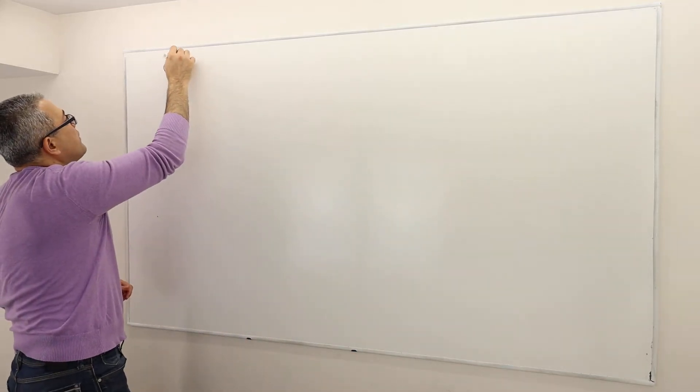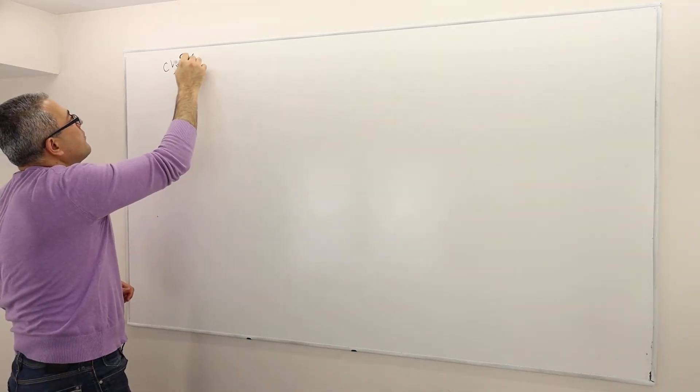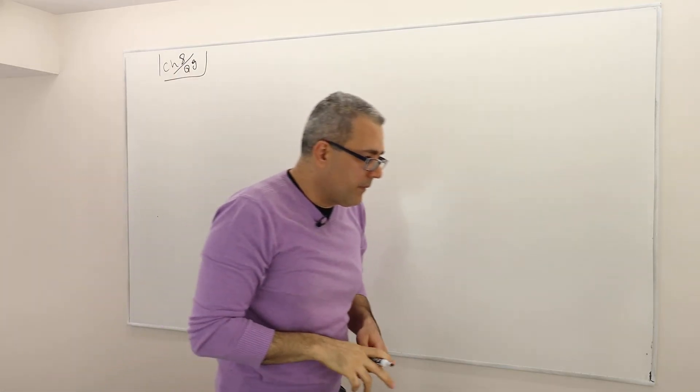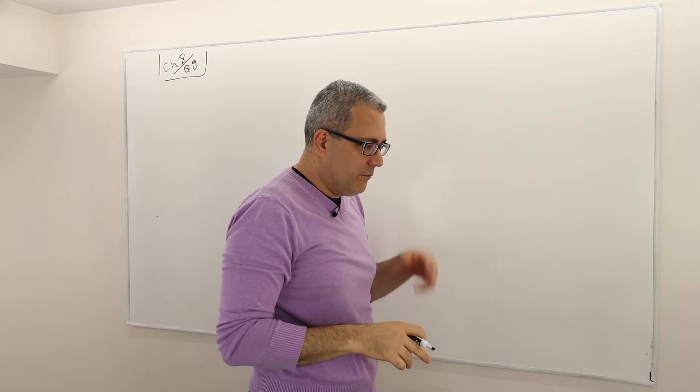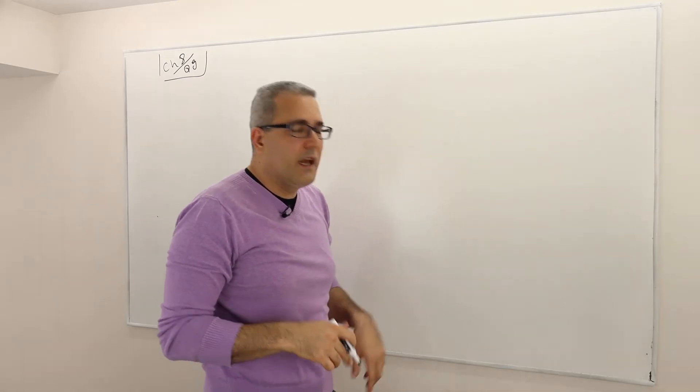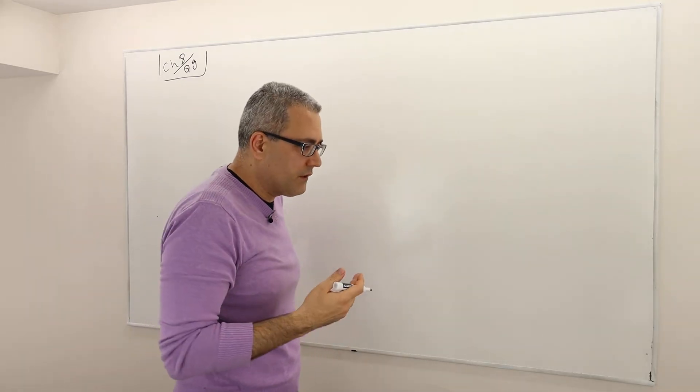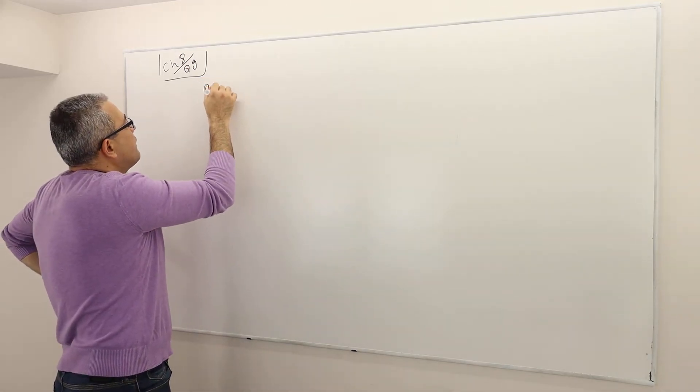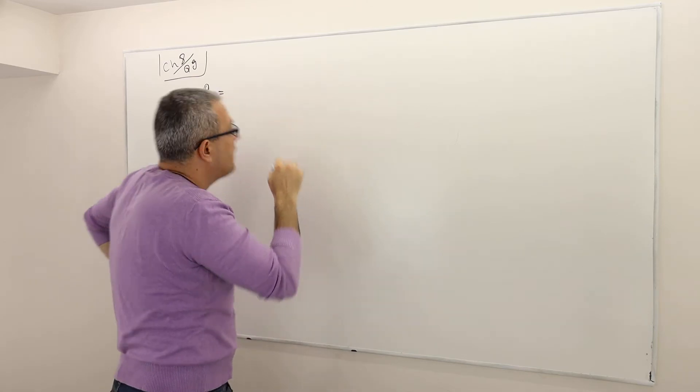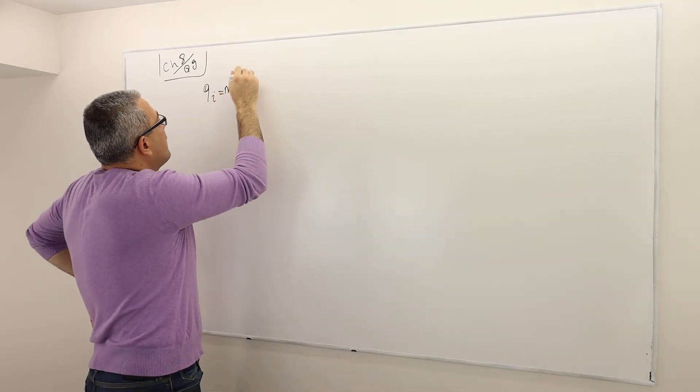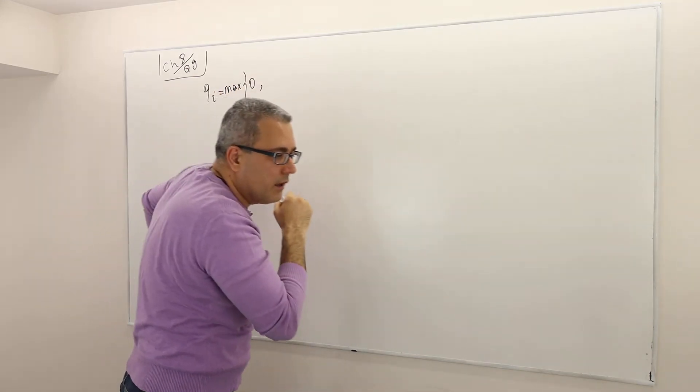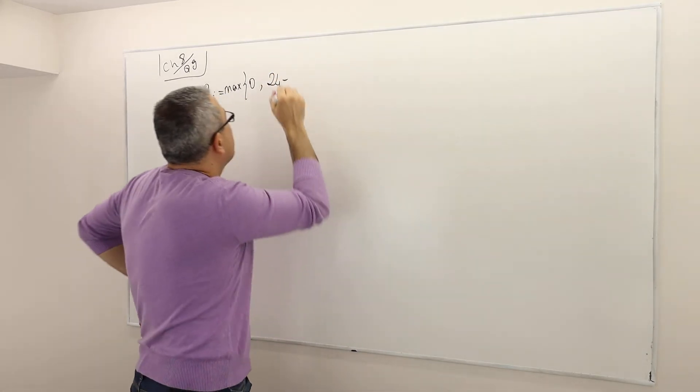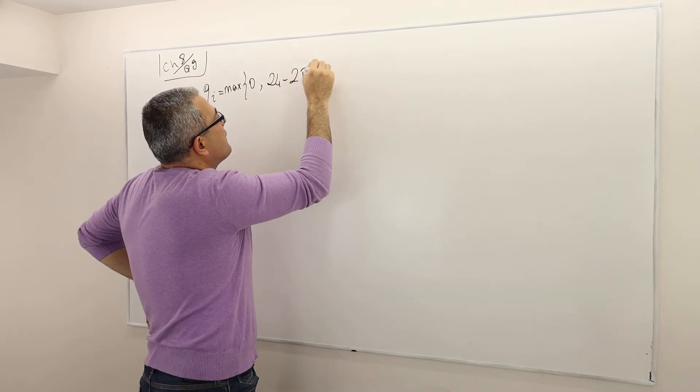This is Chapter 8, question number 9. I'm not going to read the entire question, but basically there are two firms, and each firm is choosing a price. The demand that firm i is going to get is basically the maximum of 0, 24 minus 2pi plus pj.